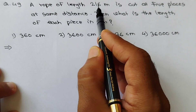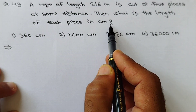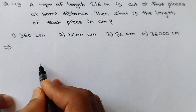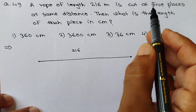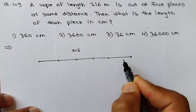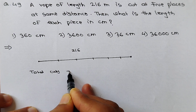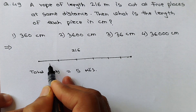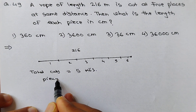See question number 49. A rope of length 216 meters is cut at 5 places at equal distances. What is the length of each piece in centimeters? Keep your presence of mind. If this is the rope with total length 216, it is cut at 5 places — first, second, third, fourth, and fifth cut. Total cuts are 5, but pieces are 6: 1, 2, 3, 4, 5, 6.